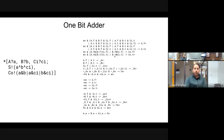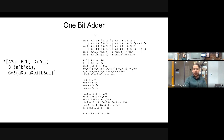The thing that's still problematic about this production set is this giant block of transistors in the forward requests. We want to do something about that. That's where shared transistor networks come in.